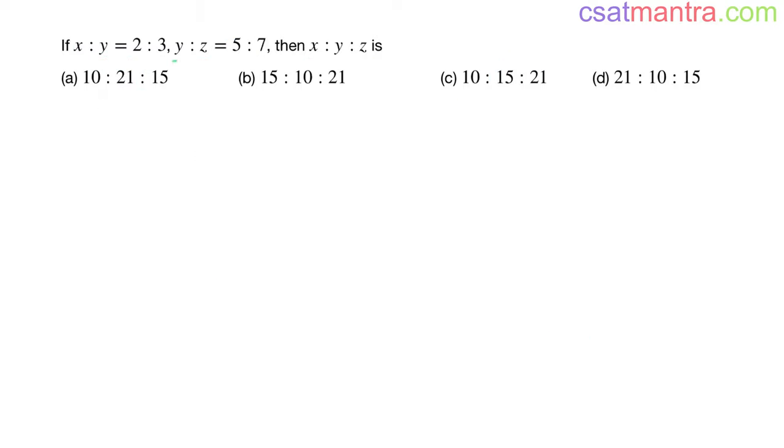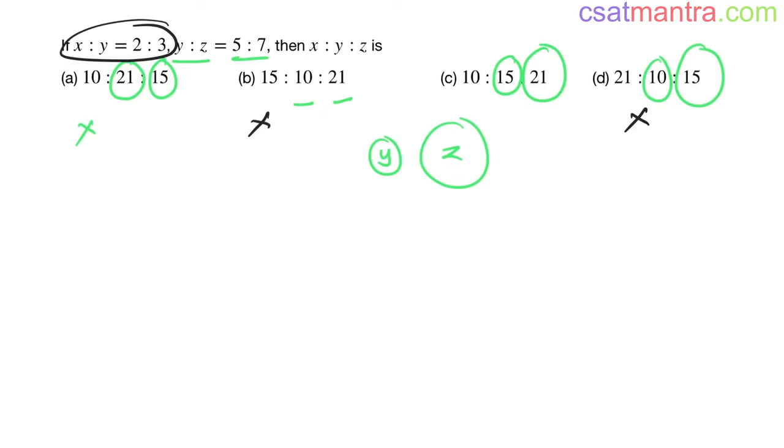You can solve this using second ratio as well. y is to z, 5 is to 7. So y is smaller, z is bigger. See, y is bigger here, z is smaller, eliminate this. y is smaller, z is bigger, satisfies. y is smaller, z is bigger, satisfies. y is smaller, z is bigger, satisfies. So we are able to eliminate one option only. Now using this, x is smaller, y is bigger. You can eliminate this, you can eliminate this. Because in these two options, x is bigger than y. 15 is bigger than 10, 21 is bigger than 10. So just comparing the values, you can answer this. Answer is C.